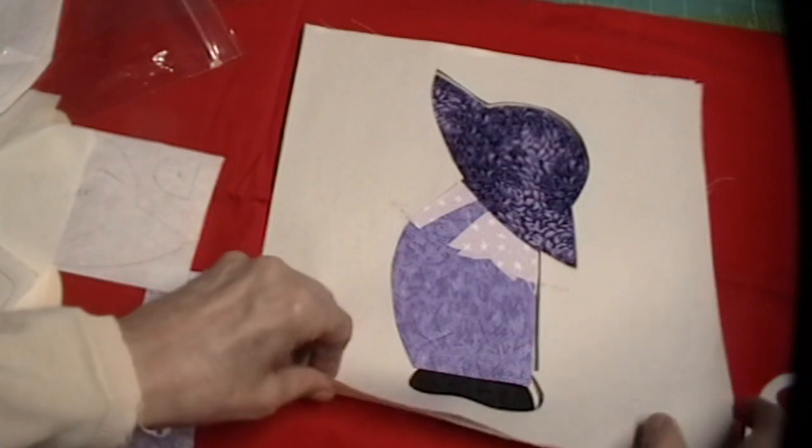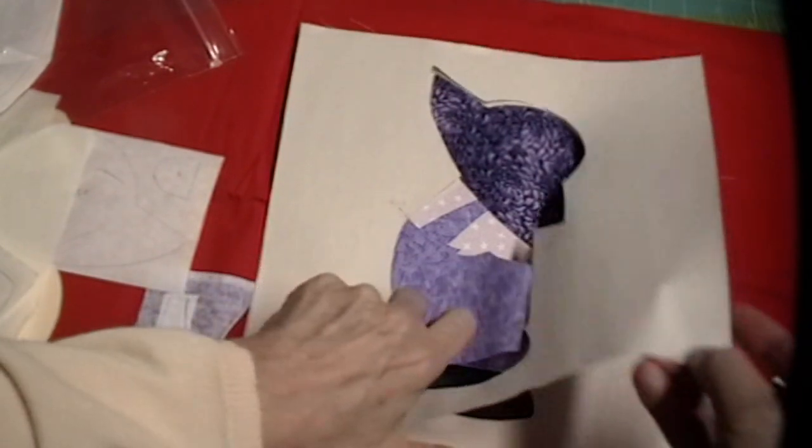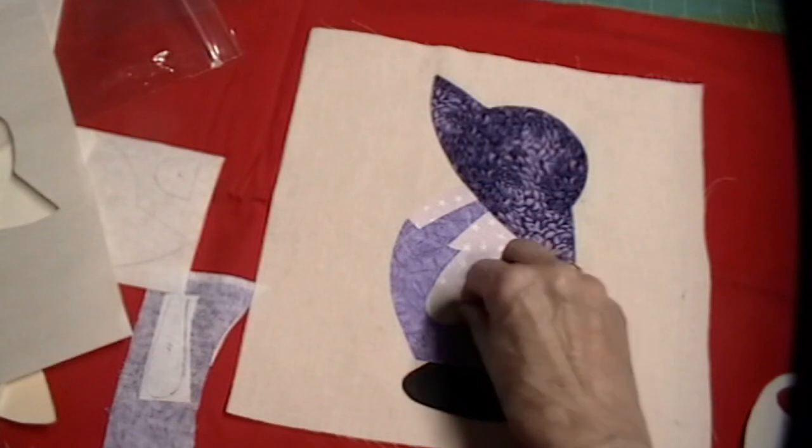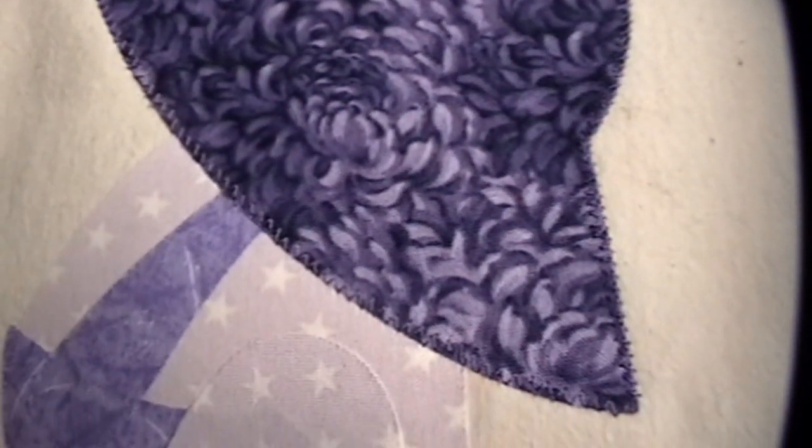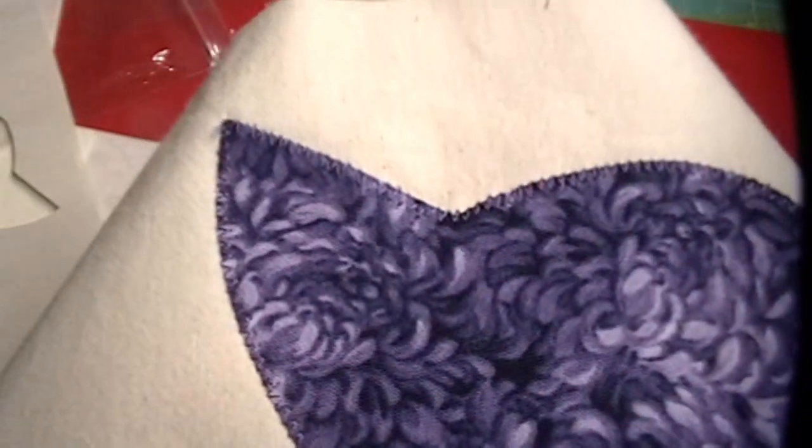Once you have them all ironed down, then all you have to do is just sew around your rough edges. On this one, I used a simple zigzag around the outside. You use the color of the piece that you are sewing down. You will change colors as you sew down the different pieces.